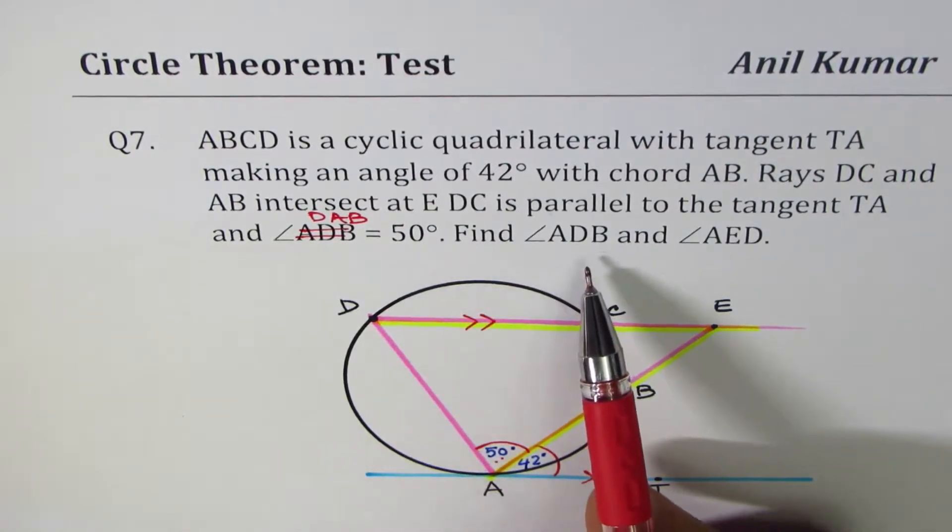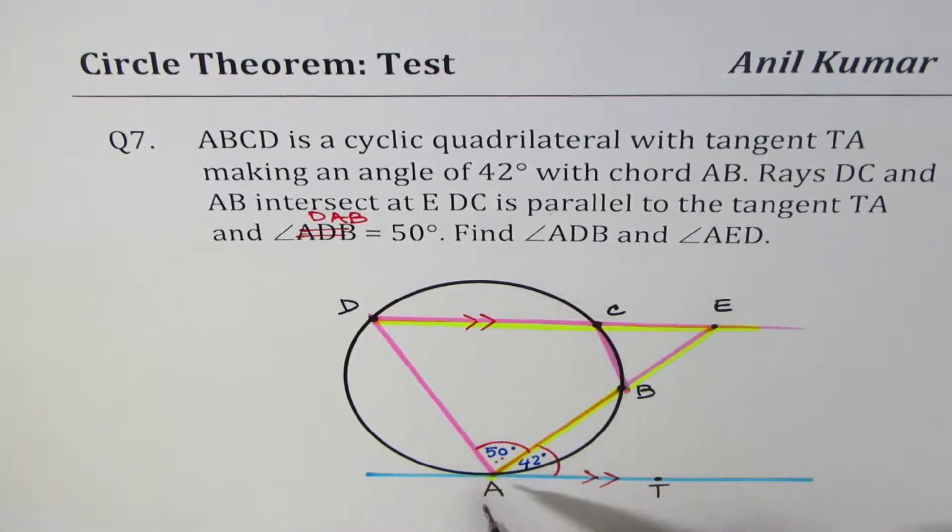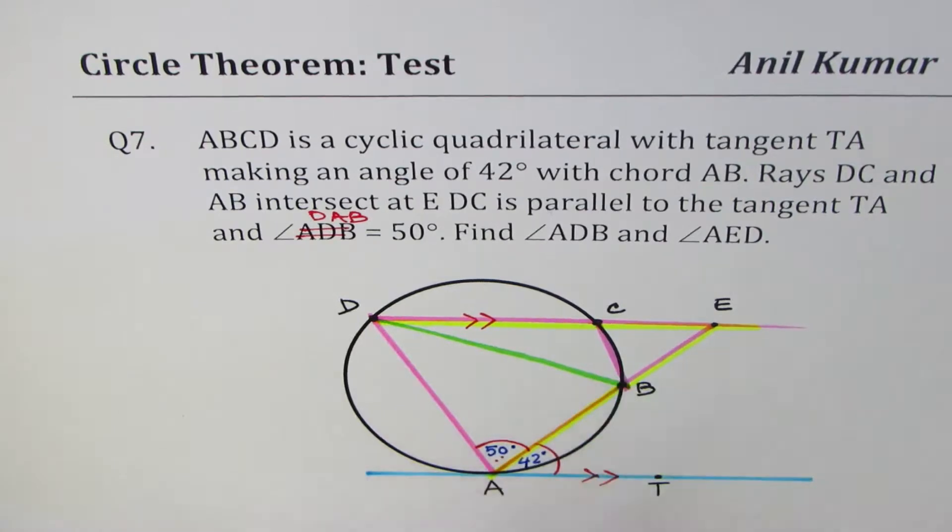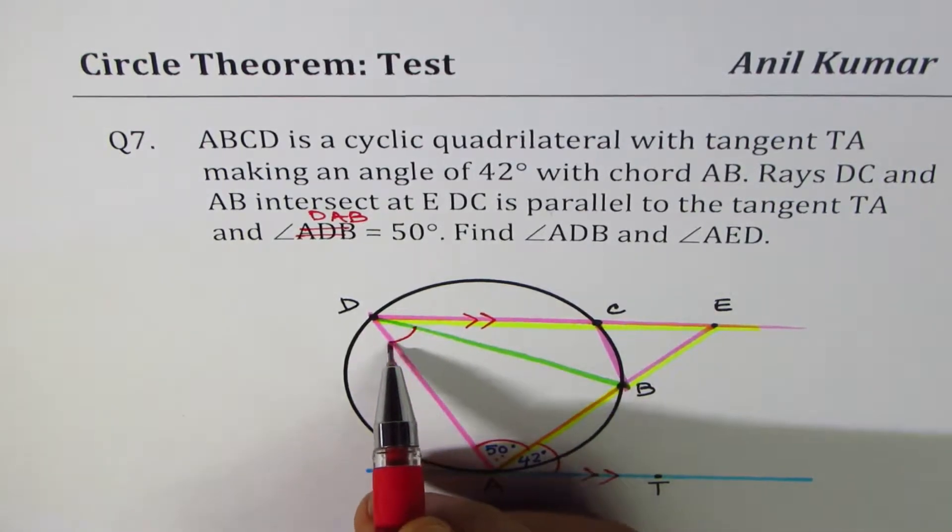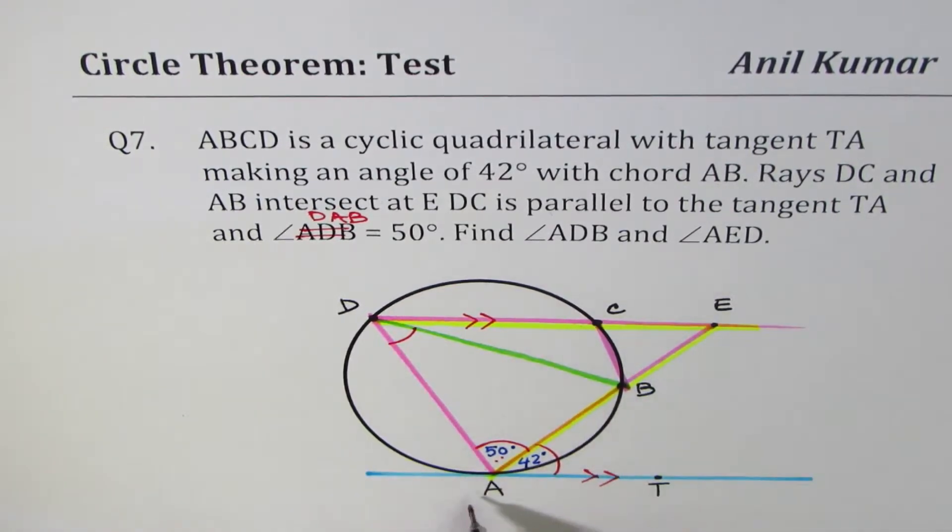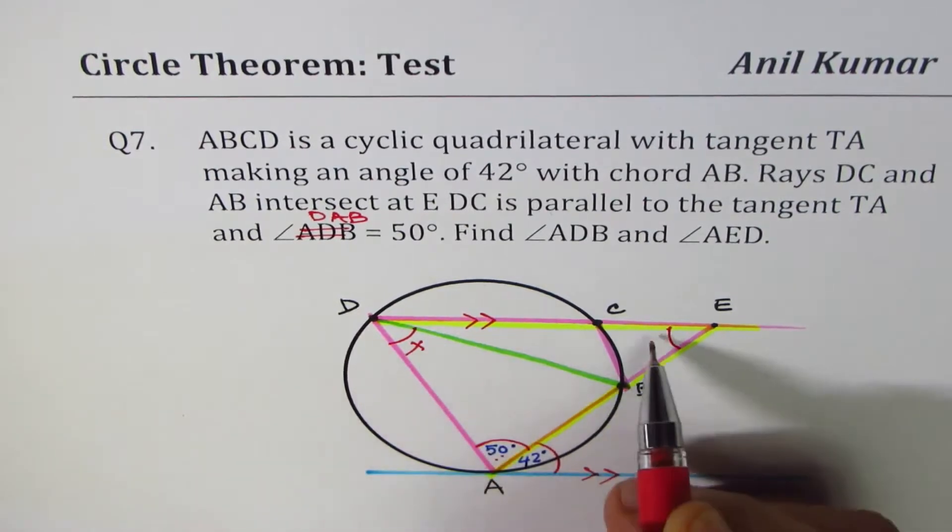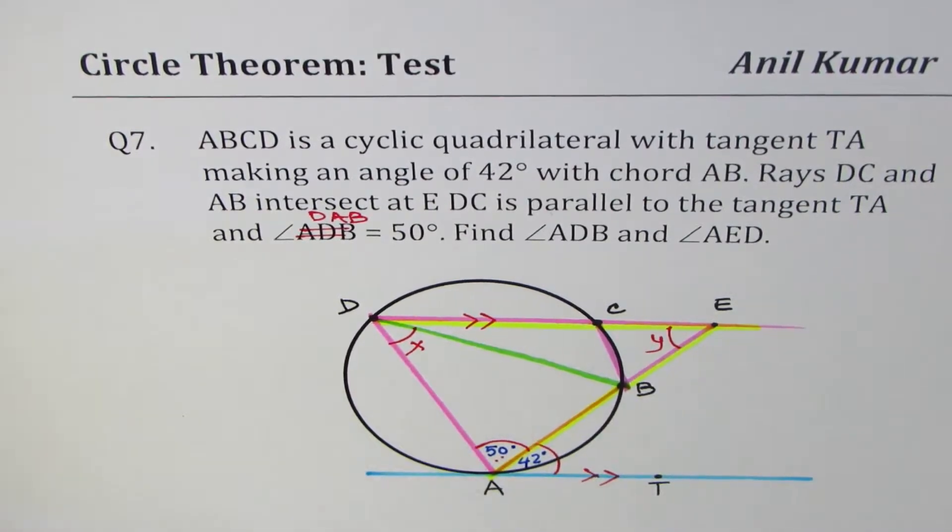Find angle ADB. So ADB, let's connect D and B. You have to find angle ADB, this angle, and AED, that angle. So let's call this as x and this is y. So I hope now the question relates to the figure we have here. You can always pause the video, answer the question and then look into my suggestions.